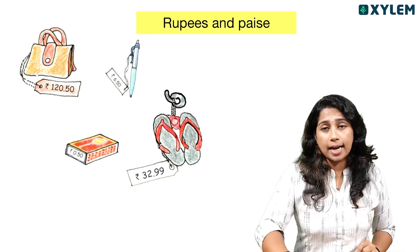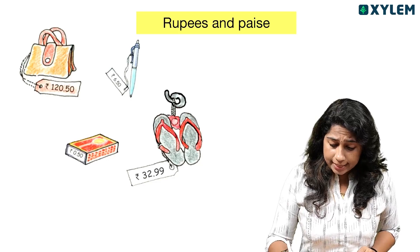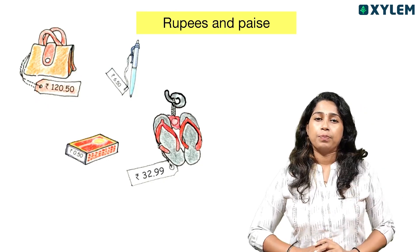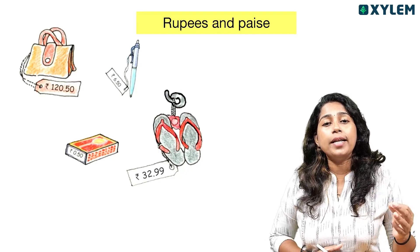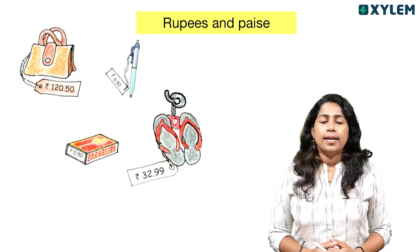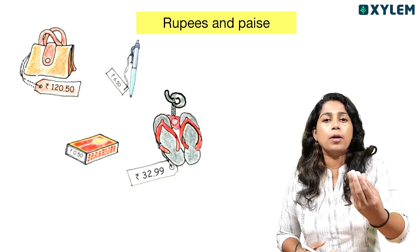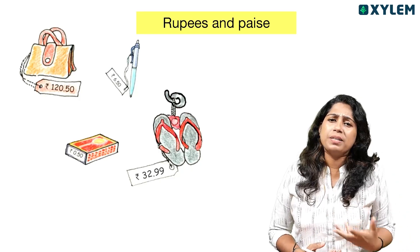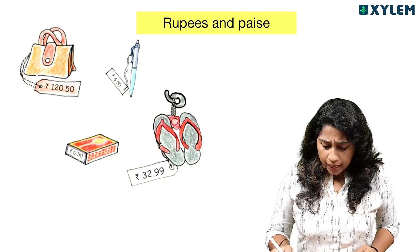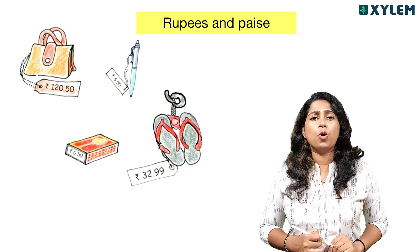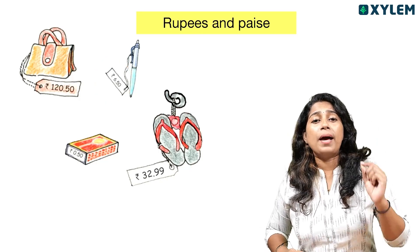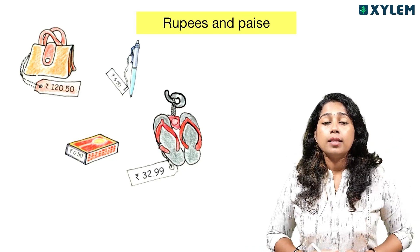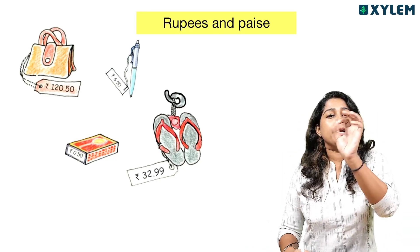The biggest thing is to look at the price tag. The price tag is 120.50 rupees. If we have 120 rupees, what is this? It is 6.50 rupees. One pen is 6.50 rupees. If we have a price tag, we can read a price tag.